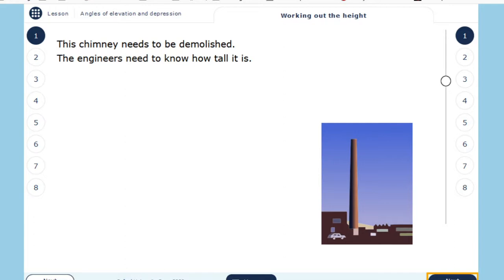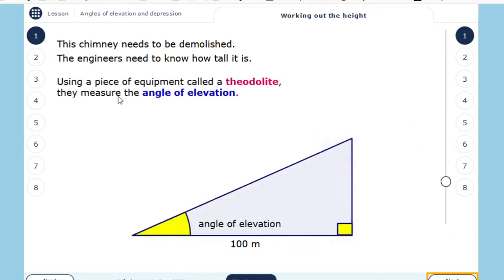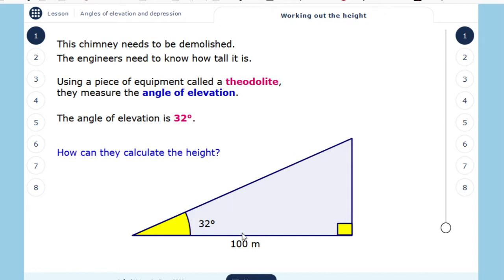This chimney needs to be demolished. The engineers need to know how tall it is. They stand 100 meters from the chimney. Using a piece of equipment called a theodolite, they measure the angle of elevation. The angle of elevation is 32 degrees. How can they calculate the height?